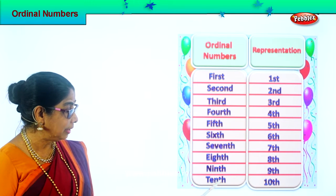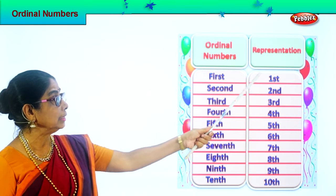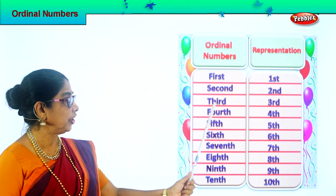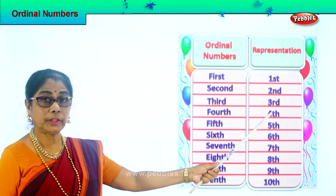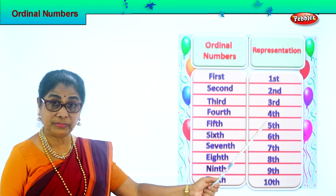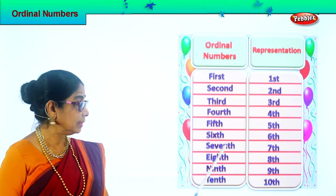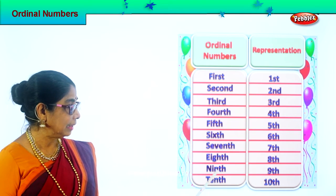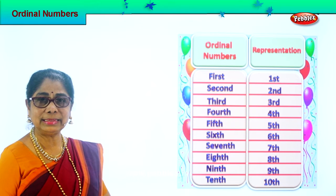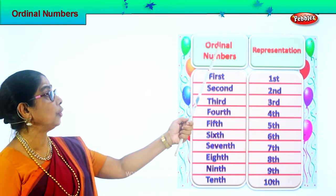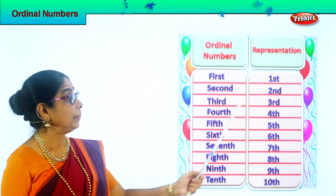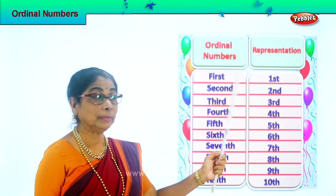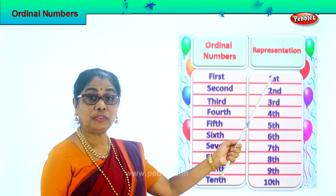Now let's read all of these. First, second, third, fourth, fifth, sixth, seventh, eighth, ninth, tenth. These are the spellings of ordinal numbers one to ten. When you don't want to write the full spelling, you represent them by writing the number and the short form: 1st, 2nd, 3rd, 4th, 5th, 6th, 7th, 8th, 9th, 10th. So now you know how to represent the ordinal numbers.